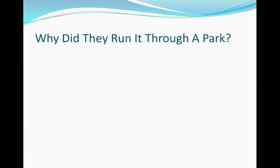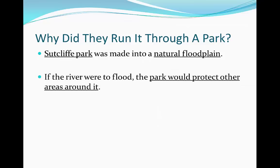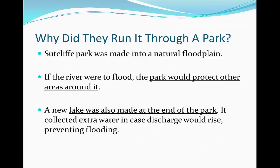But why did they run it through the park? Surely if they're removing concrete channels, which can carry more water, that's only going to make flooding much worse. Well, Sutcliffe Park was made into a natural floodplain. If the river were to flood, the park would protect other areas around it because the water would flood onto the park, which would intercept it and allow it to infiltrate the land, hence protecting everything around it. A new lake was also made at the end of the park in order to store all the water and collect it in case the discharge rises — so all of this would prevent flooding.